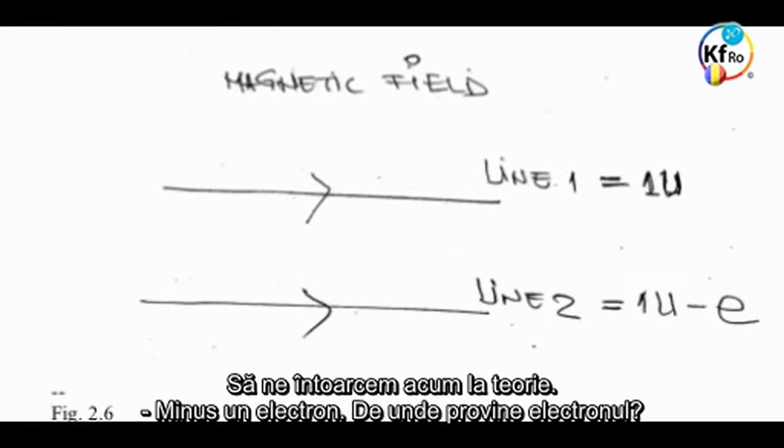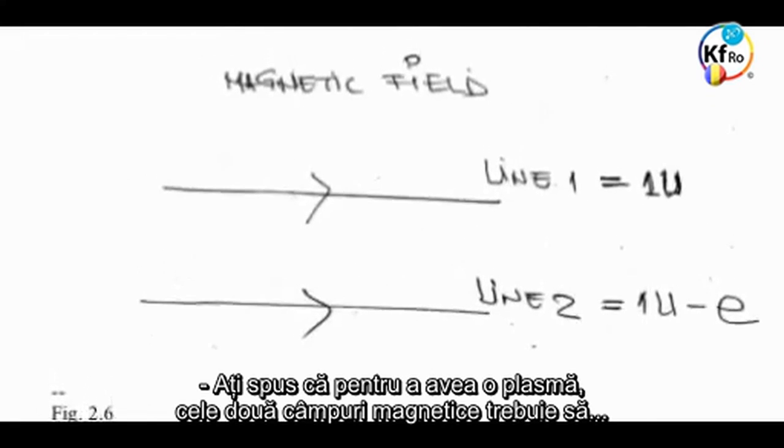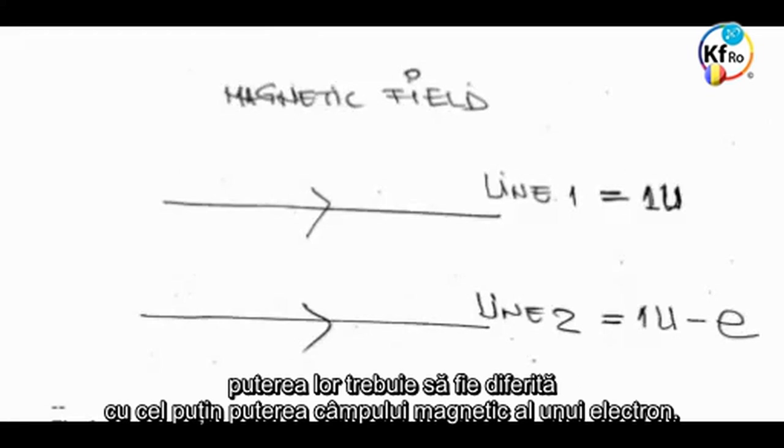Where does the electron come in? You said that in order to have a plasma, the two magnetic fields have to have strengths that are different by at least the magnetic field strength of one electron.